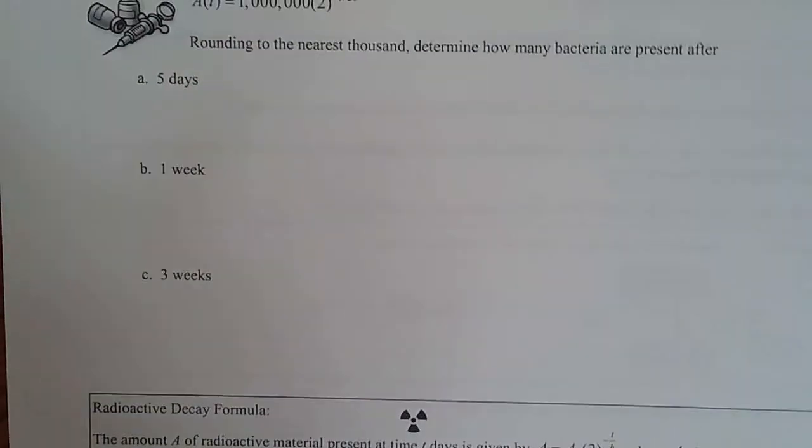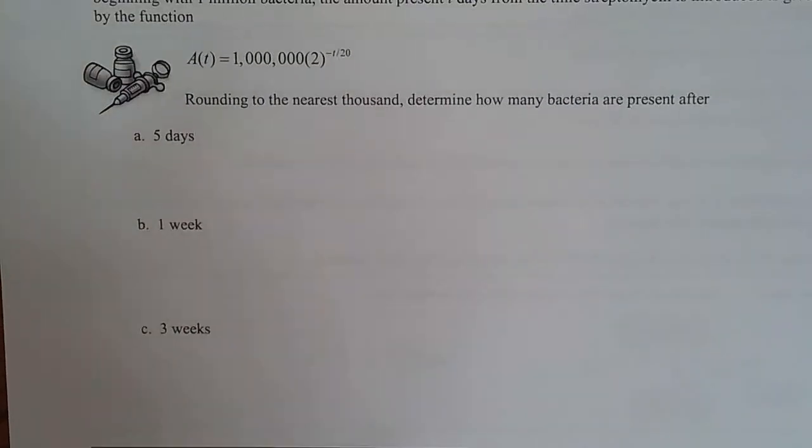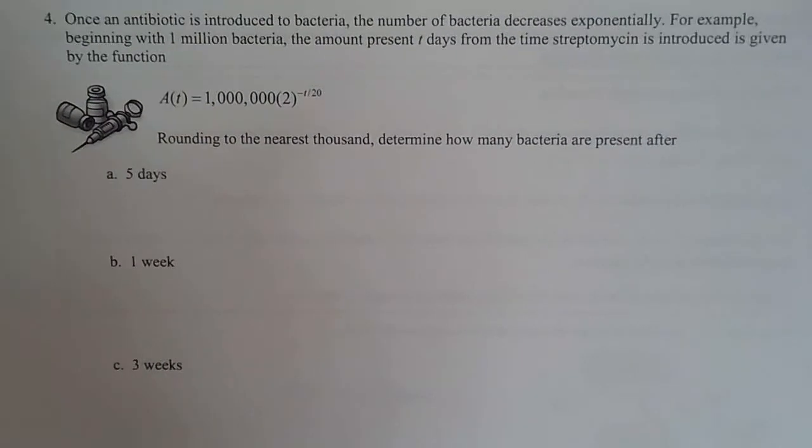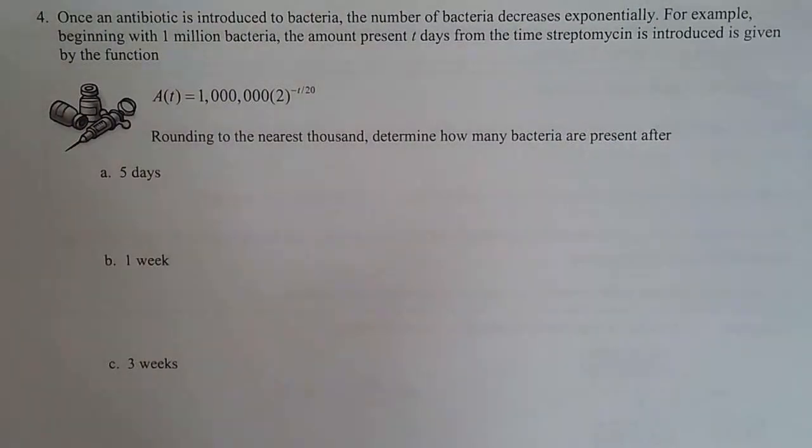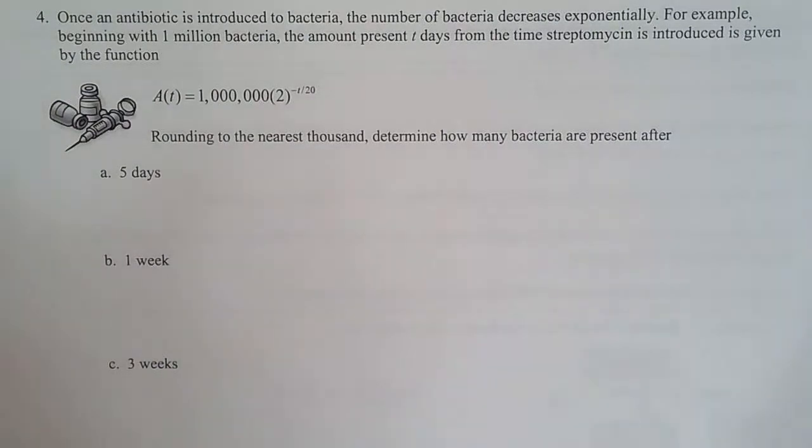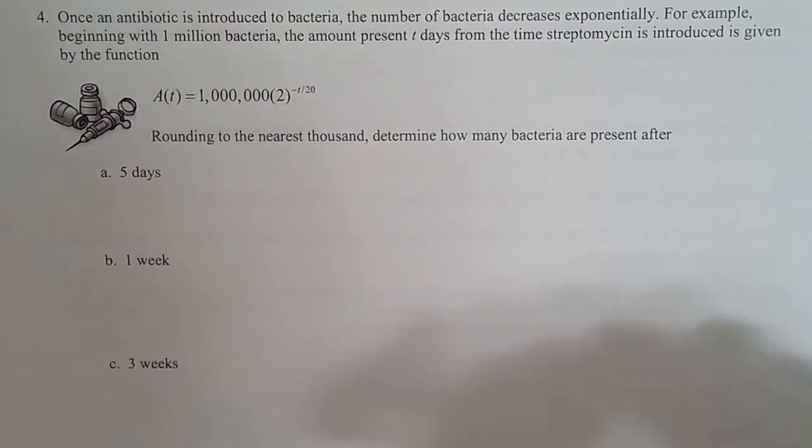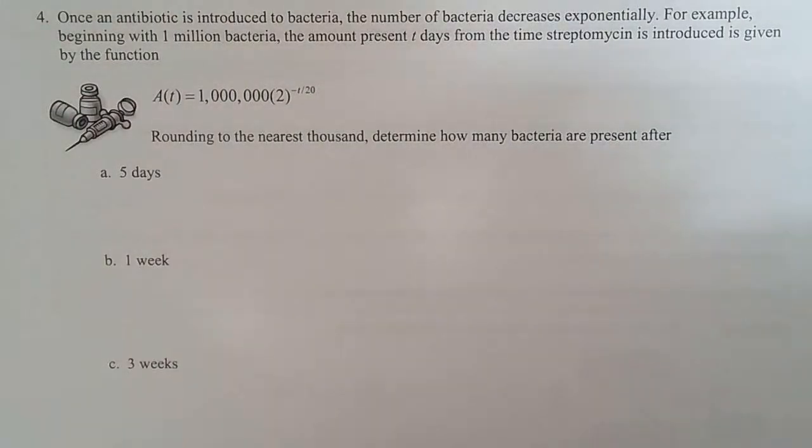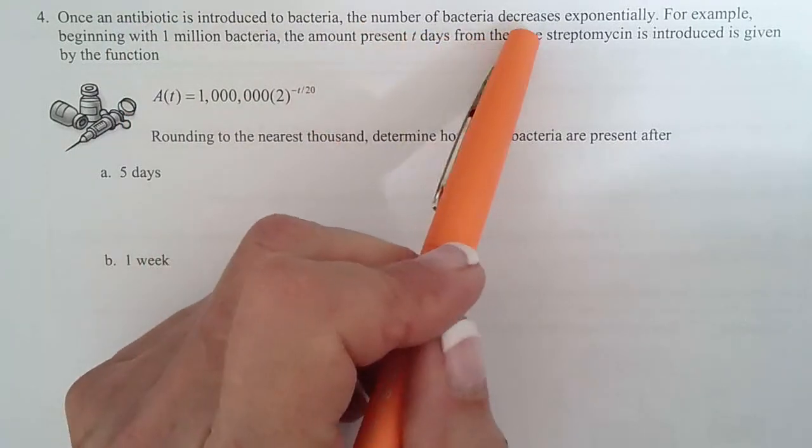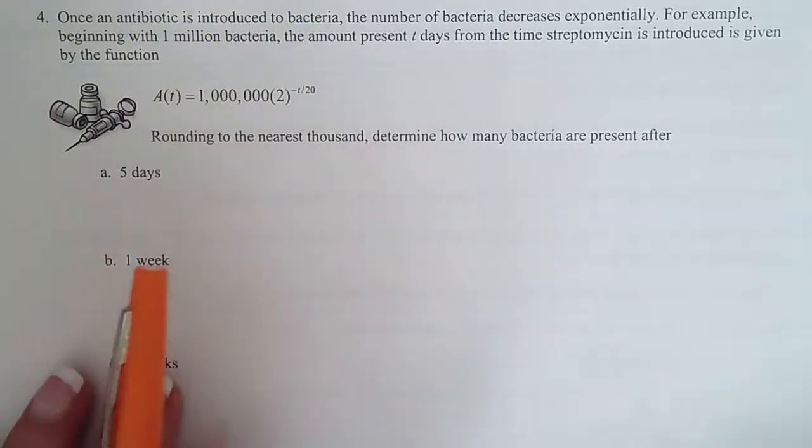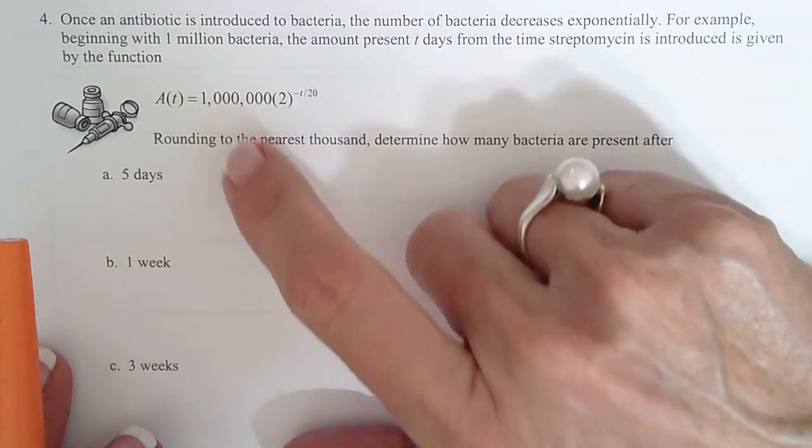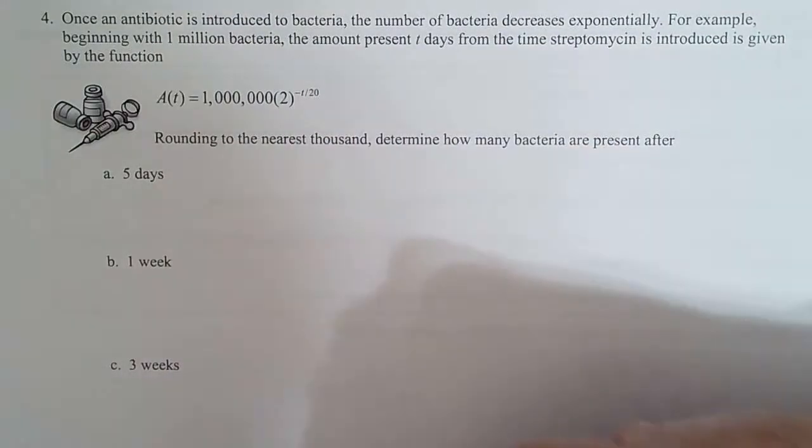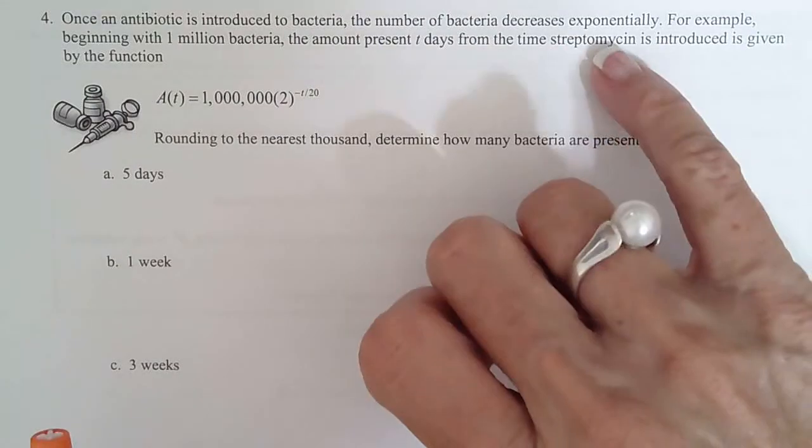Okay, so this is about an antibiotic. And this is kind of an interesting thing. They give all the places they found this information. So I think these are like real problem jokes. They're like from the medical journal and blah, blah, blah when you read through the book. So it's kind of interesting to see how long a bacteria stays in your body even after the antibiotic has been introduced. So once you start taking antibiotics, the number of bacteria decreases exponentially. For example, beginning with 1,000,000 bacteria, the amount present, so here's the beginning, 1,000,000, the amount present, but T days, so see the T there, from the time streptomyosin is introduced is given by this function. Streptomyosin is a type of antibiotic.